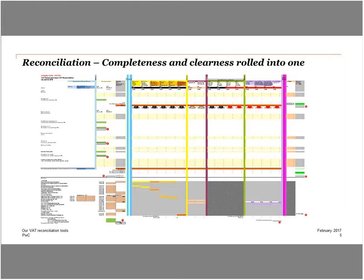The Excel file has to be set up once for your company. This means the structure of the P&L and the balance sheet as well as the VAT codes have to be set up. Once the setup is completed, the file can be used for further tax periods. The result of the reconciliation is a VAT return as it should be, based on your bookkeeping and including the amendments made as outlined before.